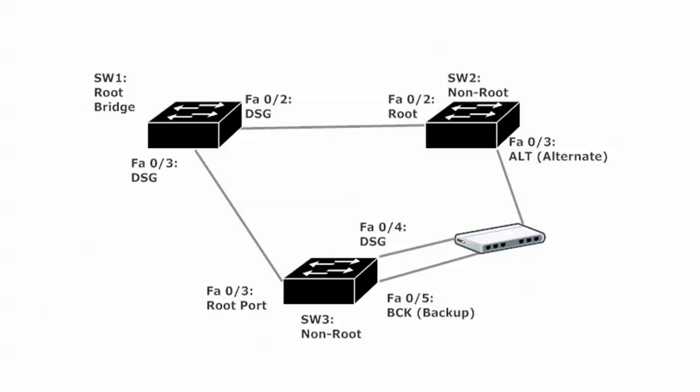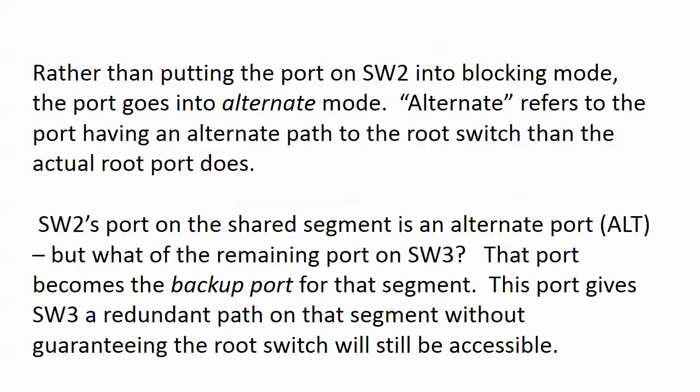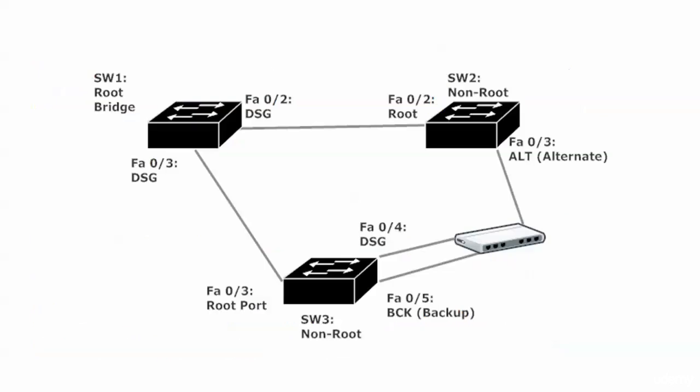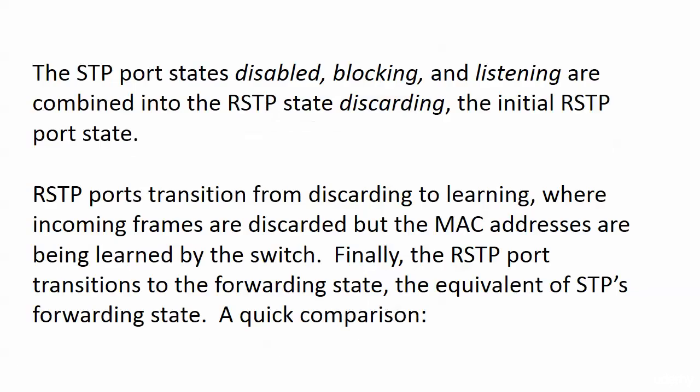What about Fast Ethernet 5 down on switch three? It actually becomes a backup port, which is another port role unique to RSTP. The name is the recipe — it's a backup port. This port gives switch three a redundant path on that segment without guaranteeing that the root switch will still be accessible. Not a real-world situation here — it's one brought in simply to demonstrate when the alternate and backup port roles would come into play.